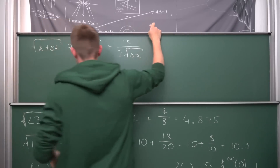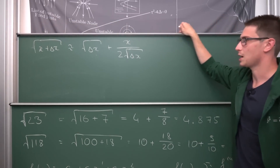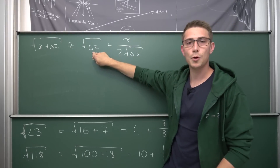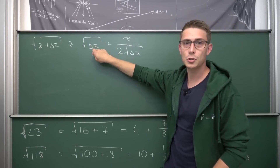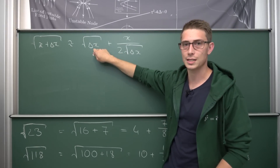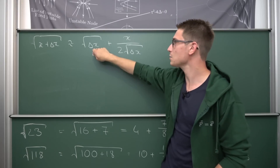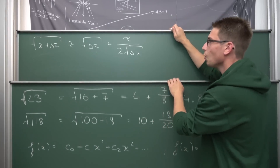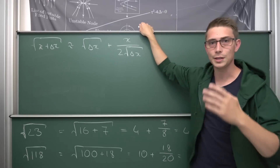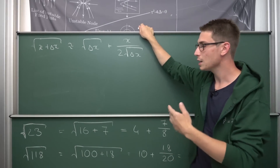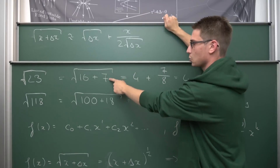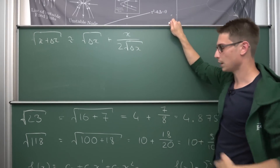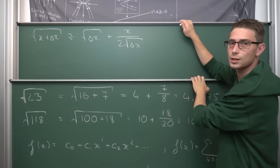Now you can see where the approximation comes from. If delta x is the nearest perfect square, then its square root becomes a concrete number — for example, the square root of 16 becomes 4. And x is our shift: for 23 it's 7, divided by two times the square root of the perfect square, giving us 8. Pretty neat.